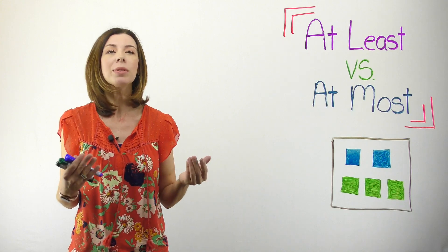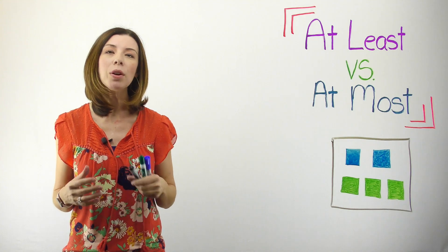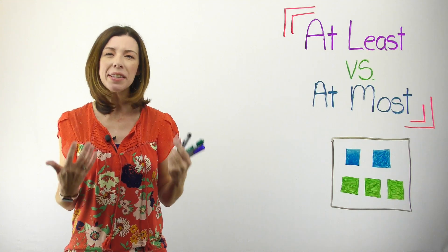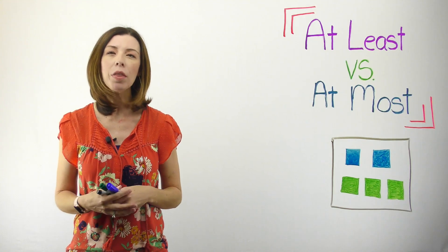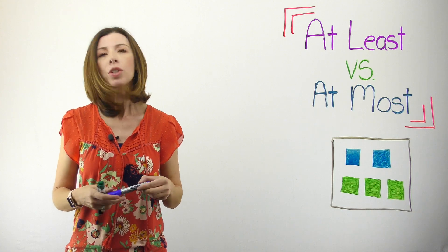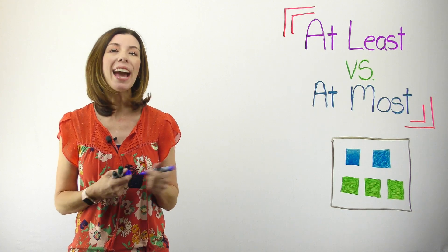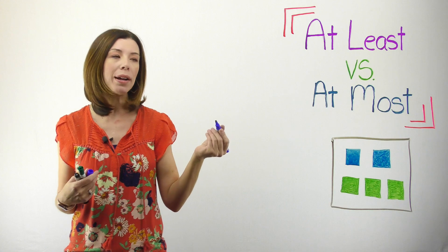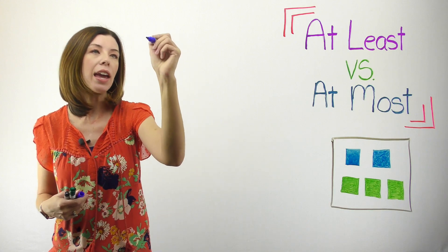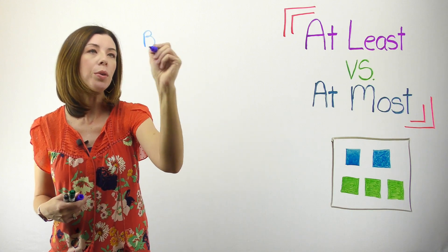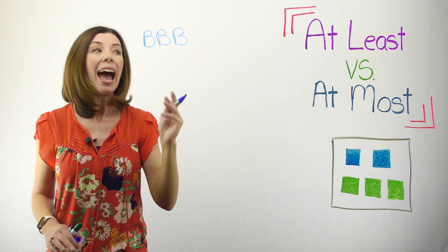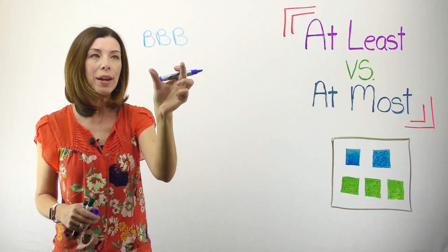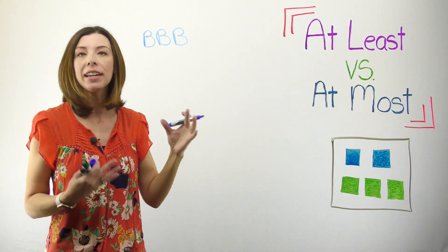If somebody was saying what's the probability of pulling out at least two blue cubes, let's think about what are all the possibilities that we could win. So if we say at least two blue cubes, one possibility is I could have blue, blue, blue — at least two blue cubes, so I'm still winning if I get three.